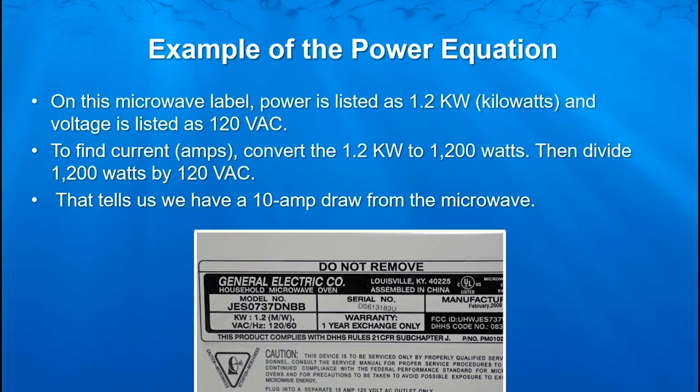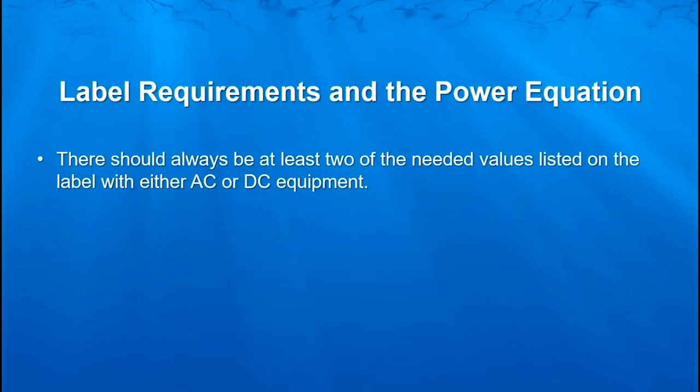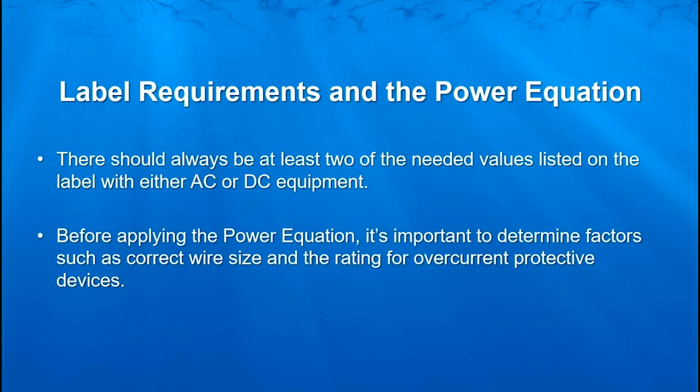That's practical application when you need to figure out overcurrent protection or wire sizing for an appliance or any component. If you're not given what the amperage draw is, that's how you can figure out what you need to deal with. There should always be at least two of those needed values listed on any equipment, AC or DC. Before applying the power equation, it's important to determine factors such as the correct wire size and the rating for overcurrent protective device.